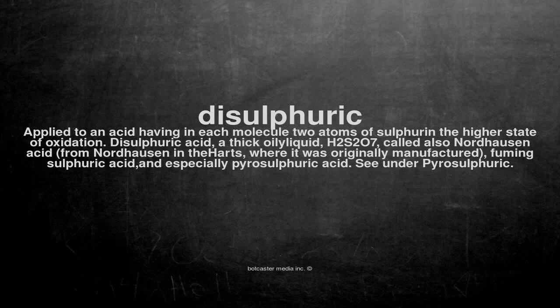Disulfuric. Applied to an acid having in each molecule two atoms of sulfur in the higher state of oxidation. Disulfuric acid, a thick oily liquid, H2S2O7, called also Nordhausen acid, from Nordhausen in the Harz, where it was originally manufactured, fuming sulfuric acid, and especially pyrosulfuric acid. See under pyrosulfuric.